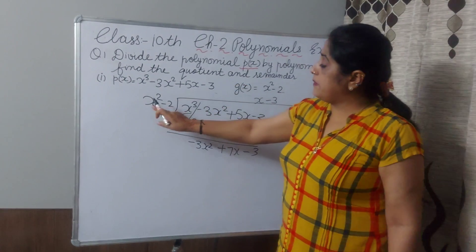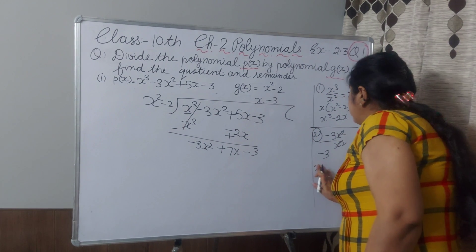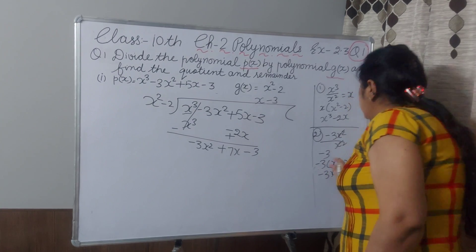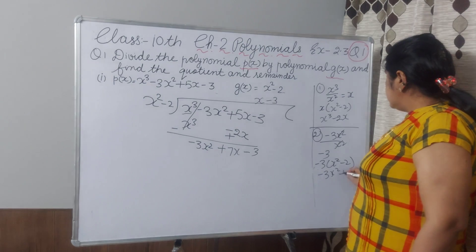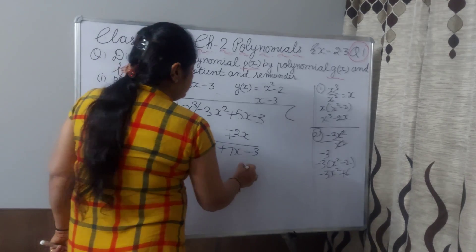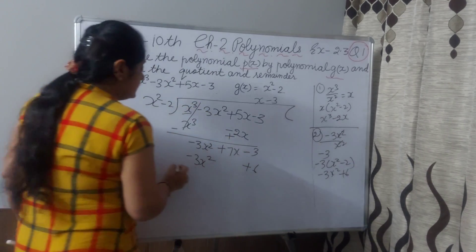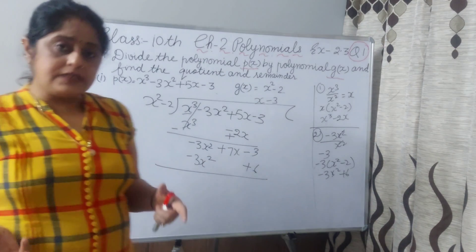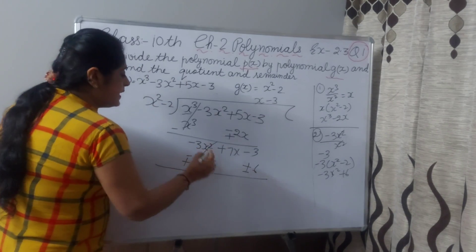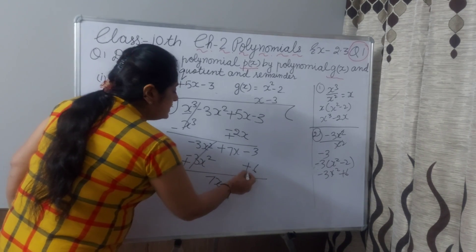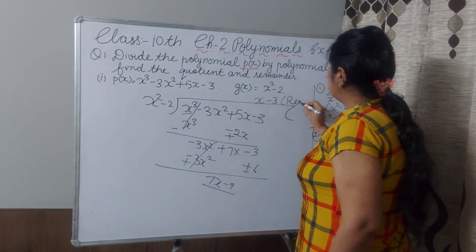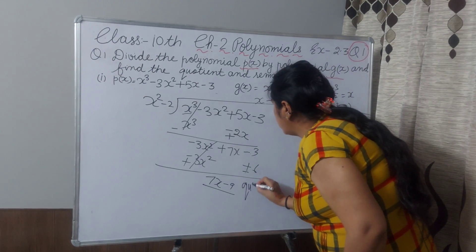Minus 3 you will write in the quotient. Now minus 3 multiply by x² minus 2: you get minus 3x² and minus times minus gives plus 6. Write minus 3x² and plus 6 here. Next step is change the sign — negative becomes positive, positive becomes negative. This will be cancelled. 7x remains, 6 is negative and minus 3 is negative, giving 9. This is our remainder, and this is our quotient.